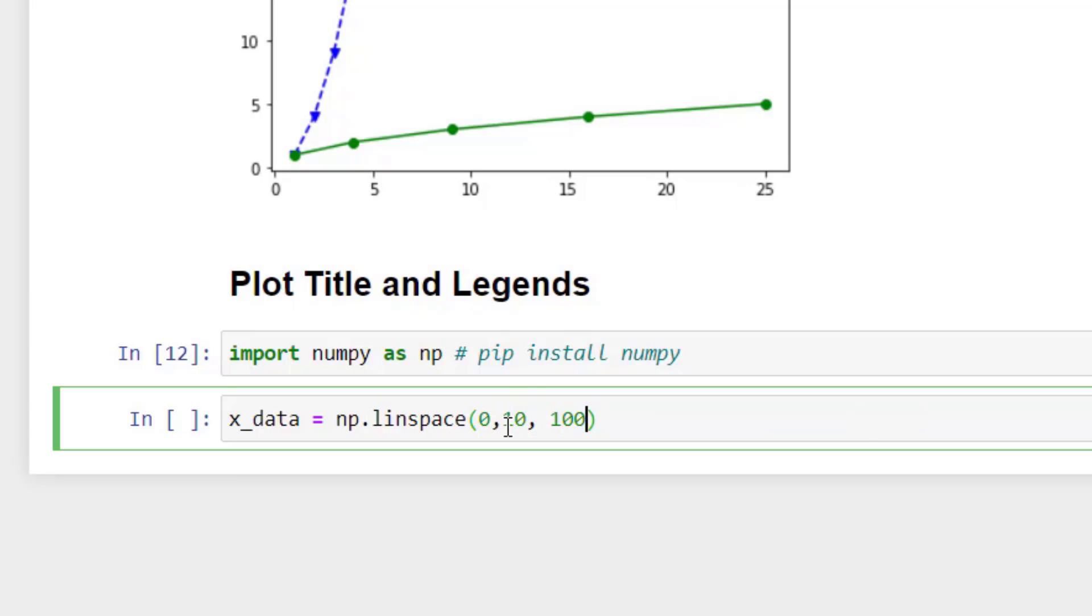Even if you don't put this, it will generate 50 data. But for my convenience, I wanted to put 100. I wanted to generate 100 data points between 0 to 10. So I hope you understand and we will run it.